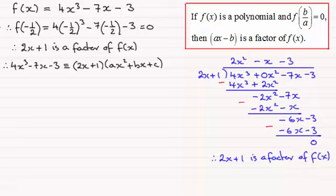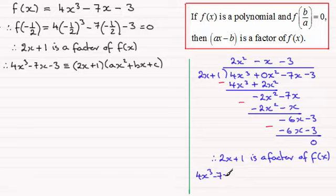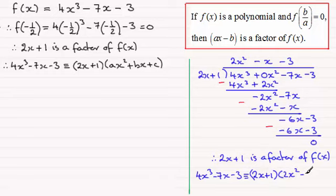So to factorize f(x) = 4x cubed minus 7x minus 3, what we've done is divide by 2x plus 1, giving us our quadratic factor which is 2x squared minus x minus 3. So we can say that 4x cubed minus 7x minus 3 is identical to 2x plus 1 multiplied by 2x squared minus x minus 3.